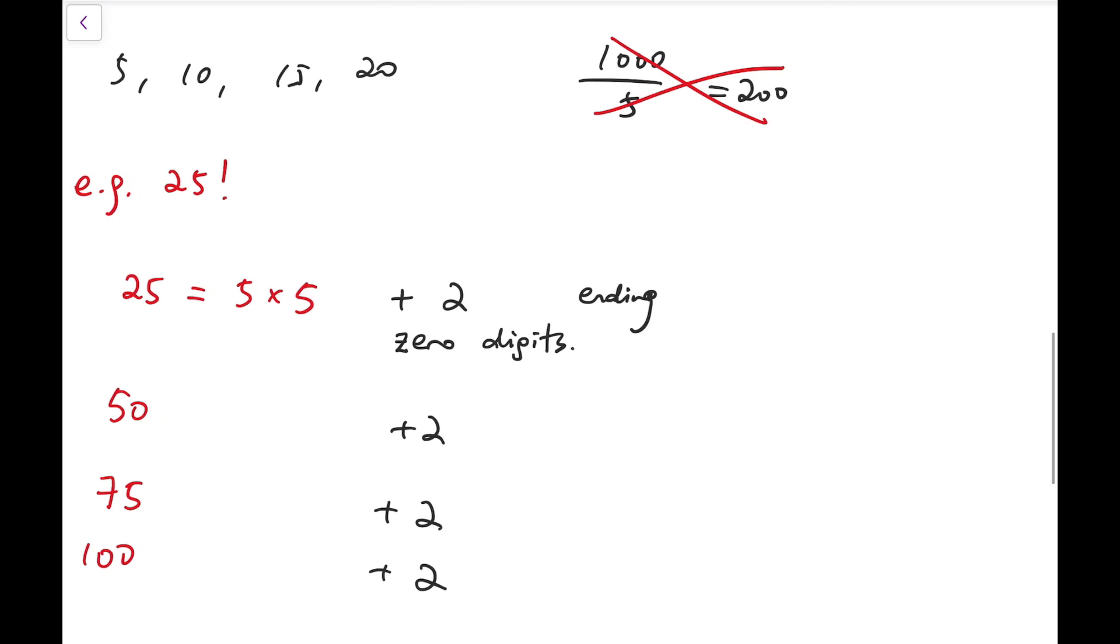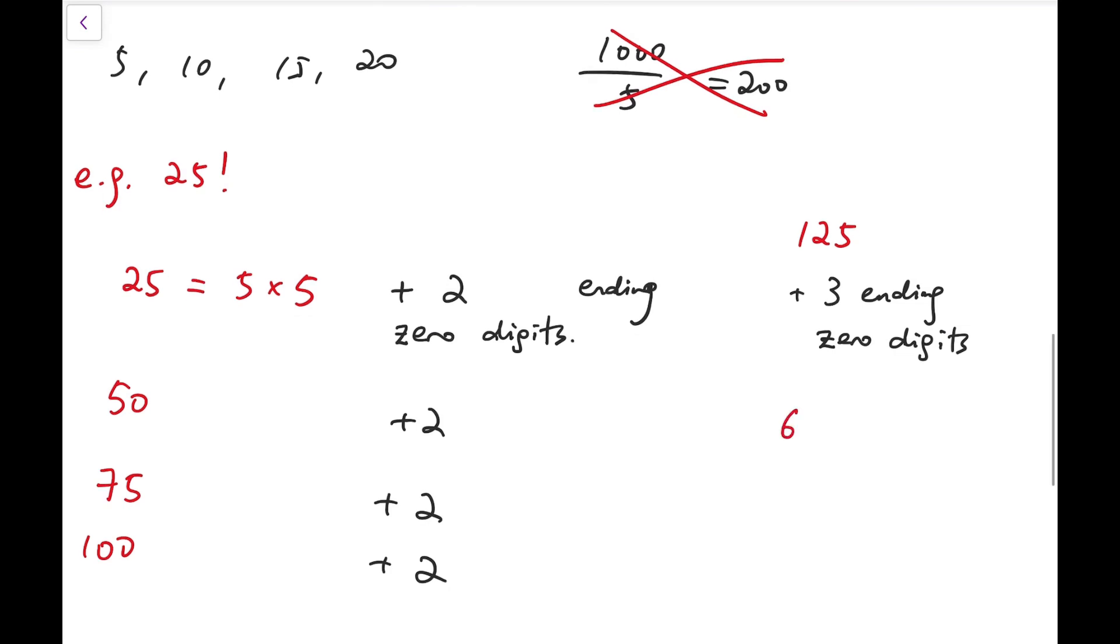So now, using a similar argument, we can say that when we multiply up to multiples of 125, then we will get 3 ending zero digits to be added. And if I can multiply up to the next power of 5, which is 125 times 5, and that's 625, then I'm getting 4 ending zero digits.